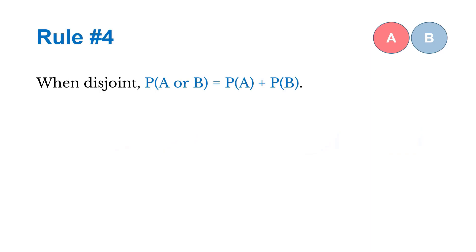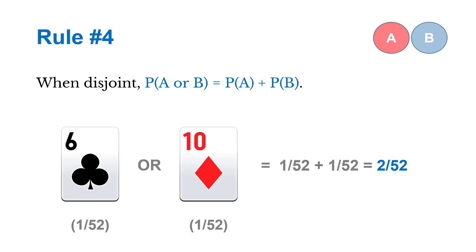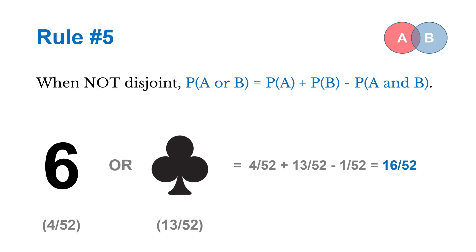Rule number four: when events are disjoint, the probability of getting A or B is just the sum of the individual probabilities. So for a deck of cards, the probability of pulling a six of clubs or a ten of diamonds is just adding those two probabilities together — one out of 52 each. When they're not disjoint, we add the two individual probabilities together and subtract the probability of them happening at the same time.